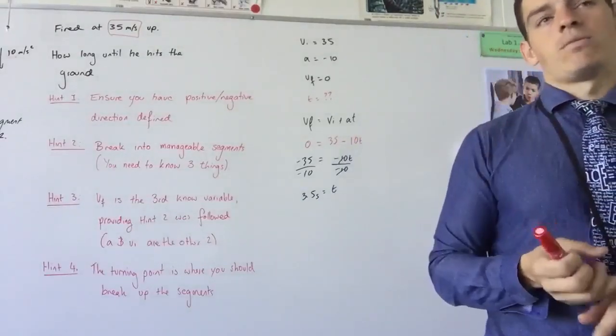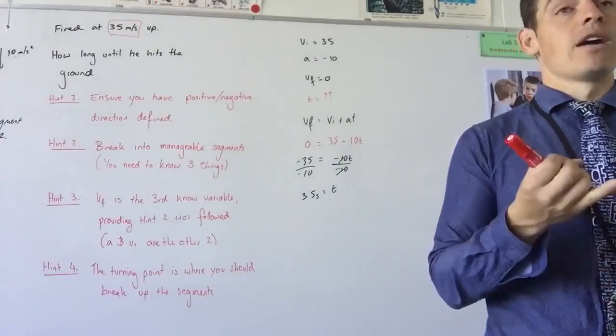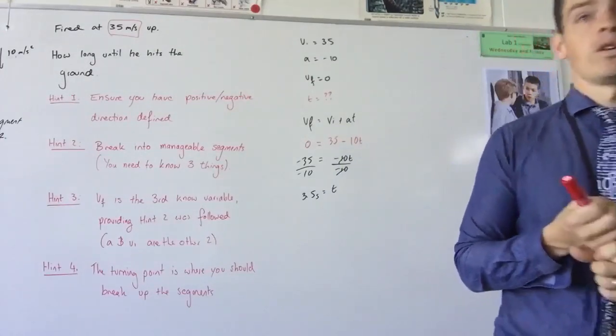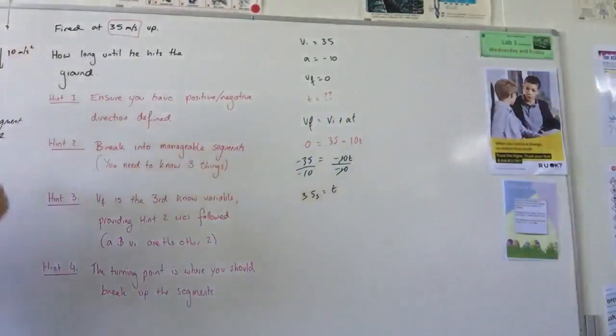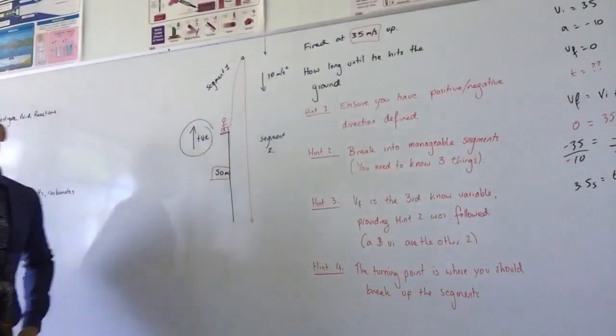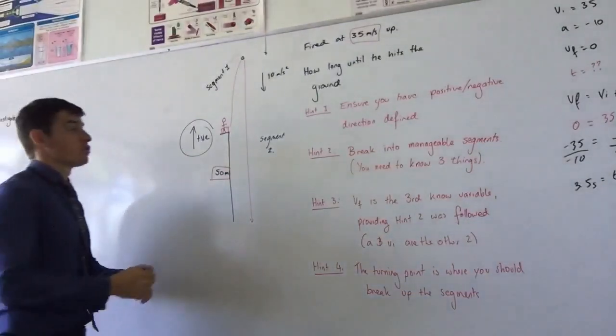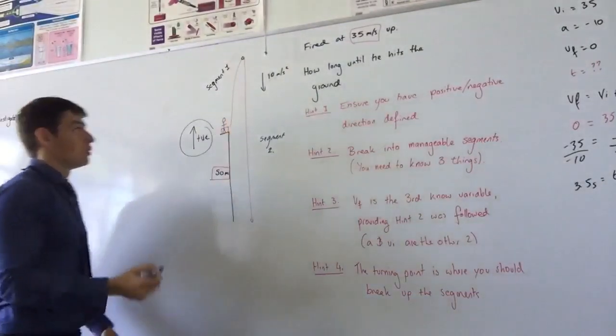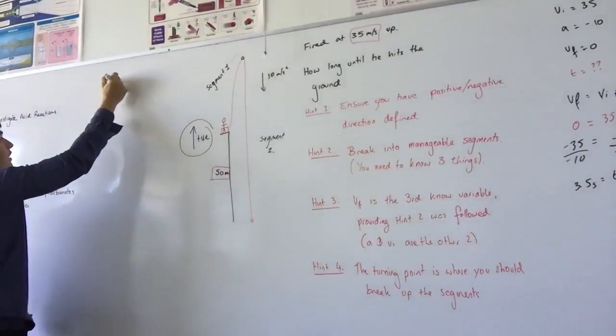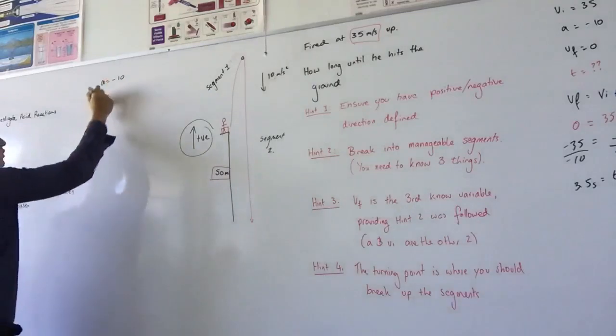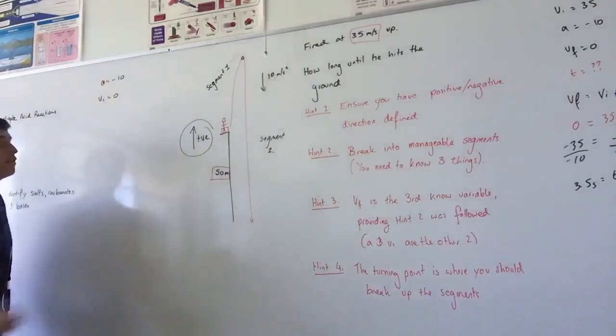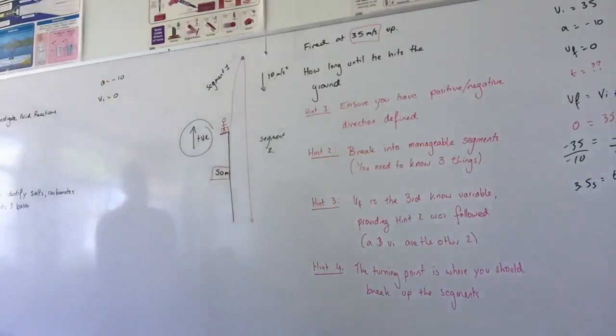Just wait up. We know our acceleration. What else do we know? At this point here, right at the top. Segment two. We're treating this like a new problem. We know acceleration is equal to negative ten. Very good. Vi is equal to zero. The V final has become our initial velocity, hasn't it? Nathan, what else do we know?